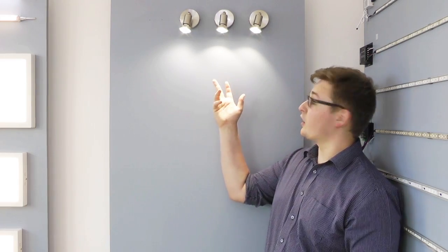Finally, we have daylight, which is 4000 Kelvins. This can generally be used anywhere throughout the home, and combines the brightness of cool white with the warmth of warm white.